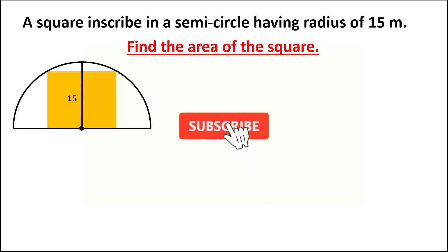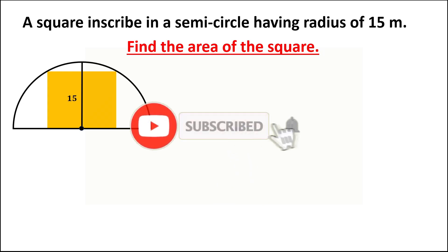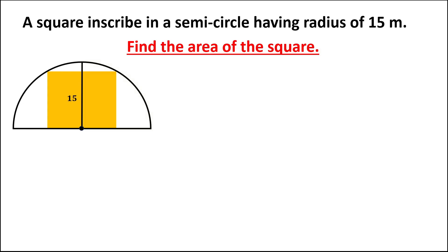Let's have this problem. A square inscribed in a semicircle having a radius of 15 meters. Find the area of the square.